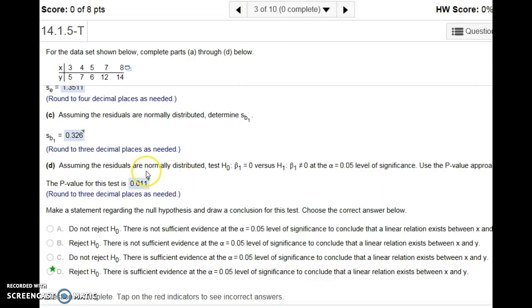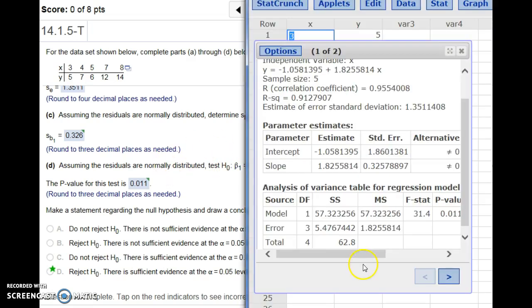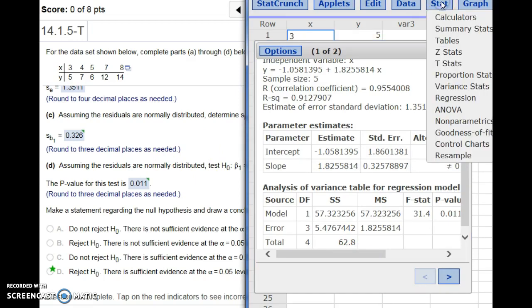Assuming the residuals are normally distributed, our null hypothesis is zero versus it's not. Five percent, use the p-value approach. When we set this up, it was actually set up correctly.